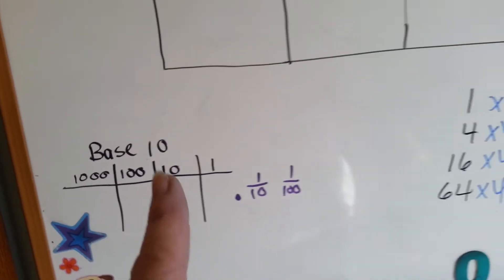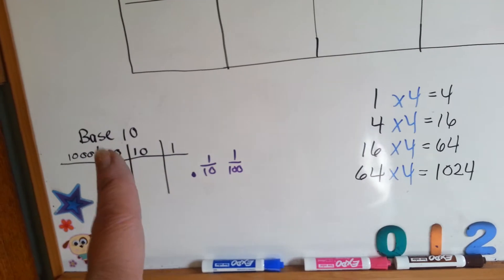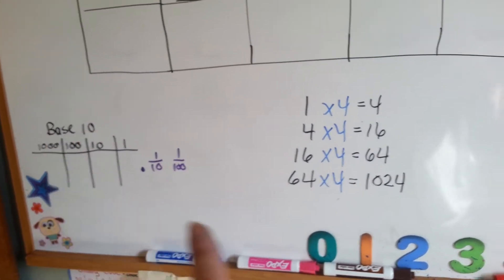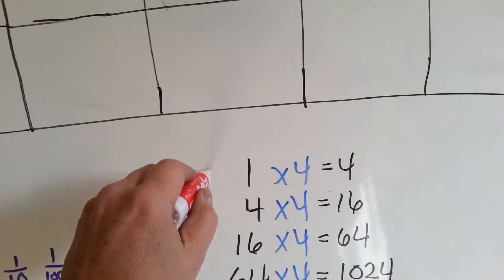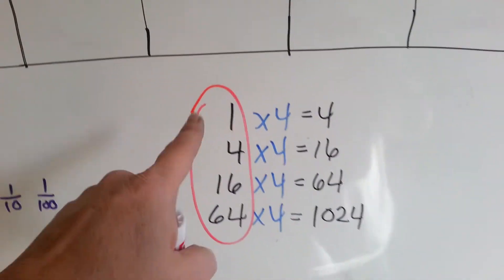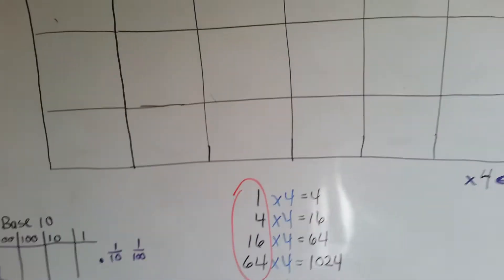Well, in base four, we're multiplying, except not by ten like the base ten does, we're multiplying by four. And that tells us right here what our columns are going to be. This is what our place value columns are going to be.